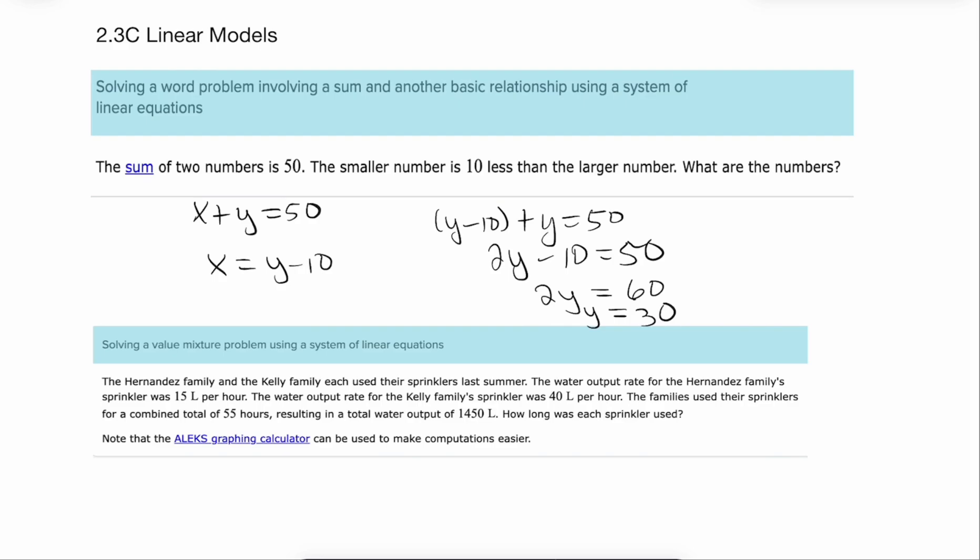Now remember you're not done yet. You're only done after you have substituted back in. You need an ordered pair. Both numbers. So x would be 30 minus 10 or 20. So our numbers are 20 and 30.